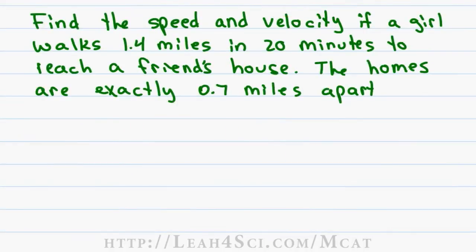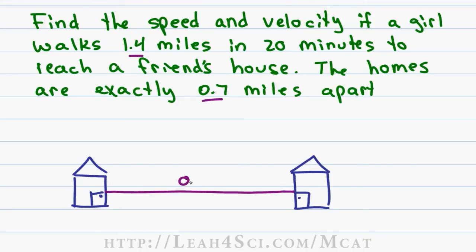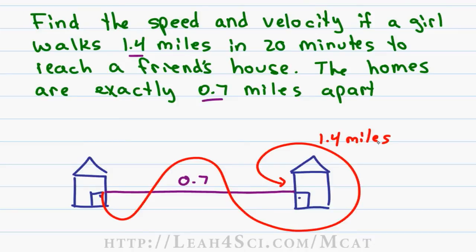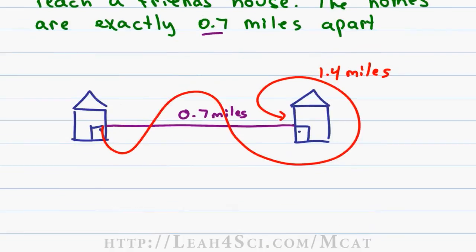Let's end with a practice question. Find the speed and velocity if a girl walks 1.4 miles in 20 minutes to reach a friend's house. The homes are exactly 0.7 miles apart. The reason there are two distances given is because if the two homes are exactly 0.7 miles, it doesn't mean that you only walk 0.7 miles to get there. Say there are streets, avenues, or general obstacles in the way, you may find yourself taking a path that looks like this for a total of 1.4 miles, even though the map says 0.7 miles.